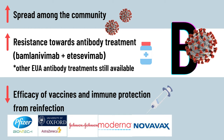Therefore, this provides evidence that although current vaccines have reduced efficacies, two doses of these vaccines are still effective against the beta variant with more than 50% efficacy, which is the efficacy cutoff point set by the Food and Drug Administration.